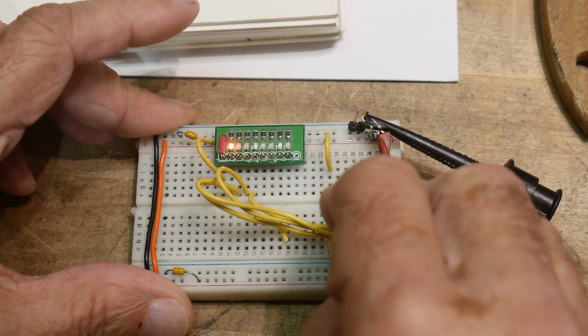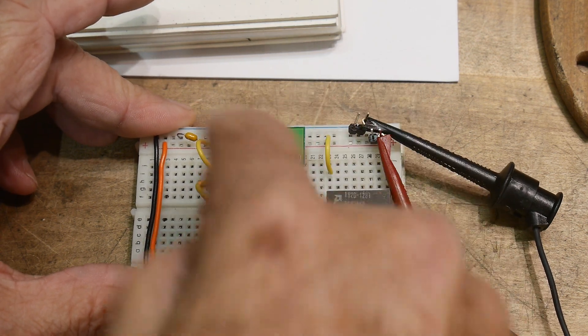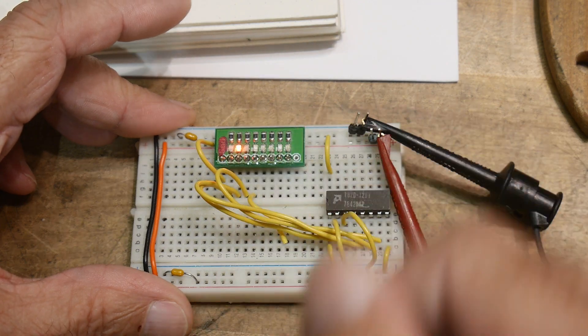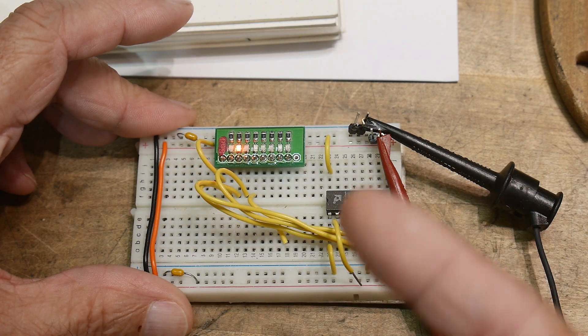And if I change the A input, there we go. Now we've gone, we're inputting instead of zero, zero, we're now inputting A is one and B is zero.